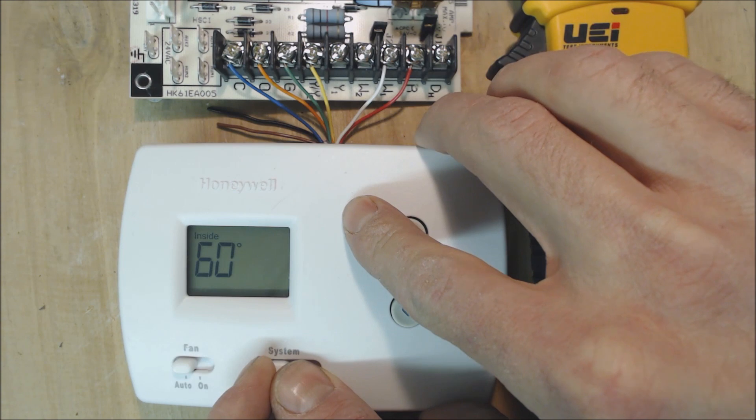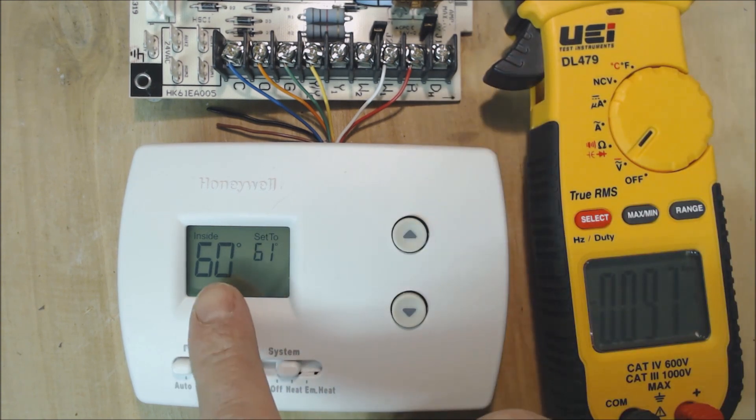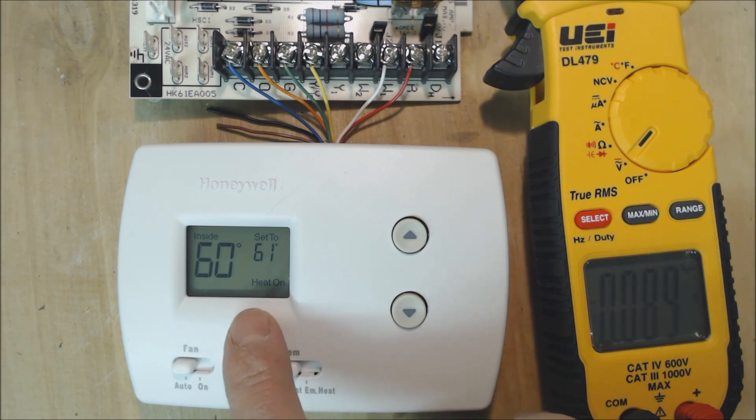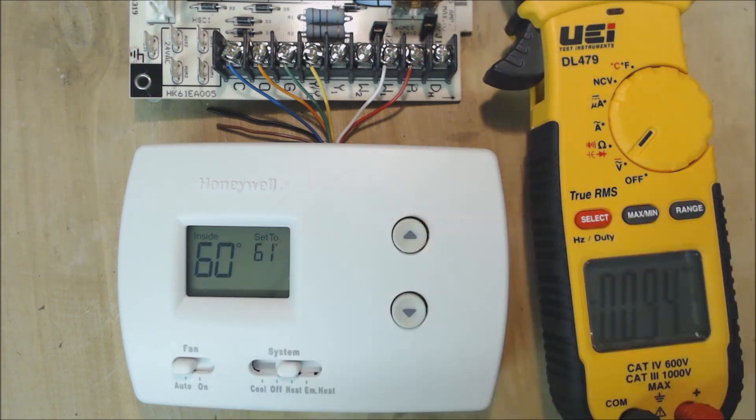Now if we turn the thermostat to heat, you see it's now 60 in the room and we have the thermostat set at 61. We just had cooling on, then we turned it off, and now we're turning on the heat. You see this heat on is flashing. It's not going to automatically turn the heat pump in reversed mode and provide heat in the house.